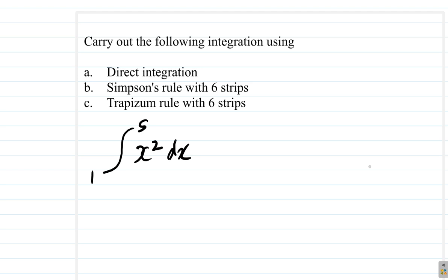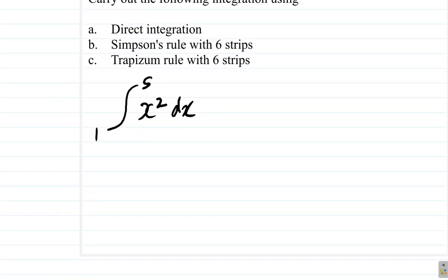We did a somewhat similar one before. We had used 8 strips, 7 strips, and 6 strips with x cubed. Now, let's use 6 strips with x squared. But first, direct integration. Part A.